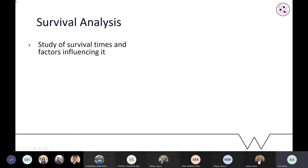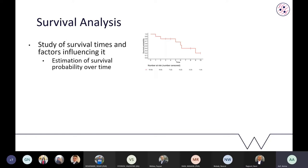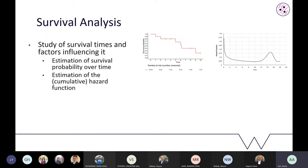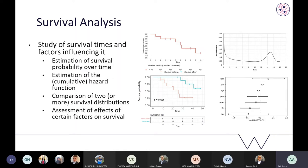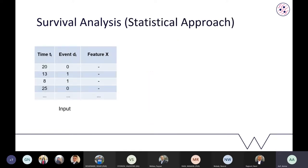Survival analysis, as the name suggests, is the study of survival times and the factors that influence the survival of an individual. We are mostly interested in four kinds of analyses: estimating the survival probability of an individual over time, understanding how the hazard behaves over time, comparing the survival of two groups, and modeling the effect of certain factors on survival.